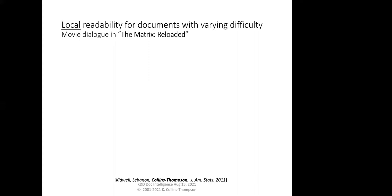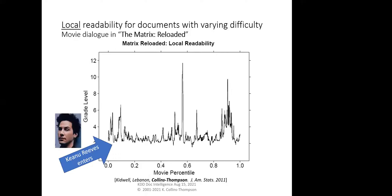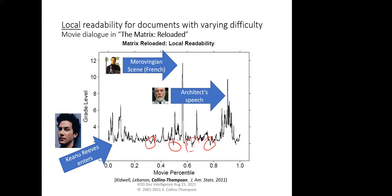We used the local readability to identify hotspots — really difficult sections that might need flagging. One example in our Journal of the American Statistical Association paper: I ran the Matrix Reloaded script through the local readability model. It does a good job of identifying interesting events. Whenever Keanu Reeves enters the scene, the readability level plummets to the lowest possible level — a fairly consistent phenomenon. There's also a scene in French and the famous Architect speech at the end. This kind of reveals how modeling difficulty allows you to see a different perspective on a document that you might otherwise miss.